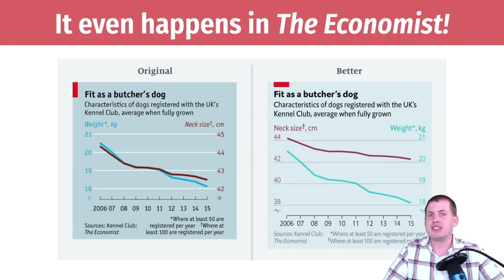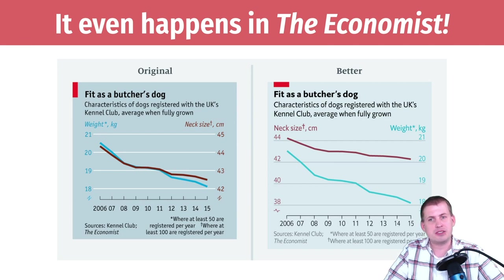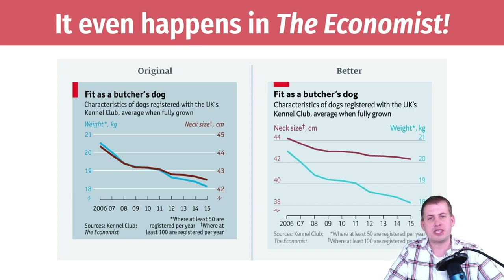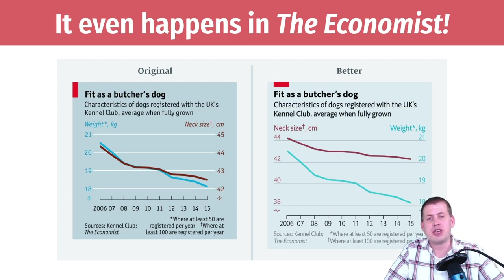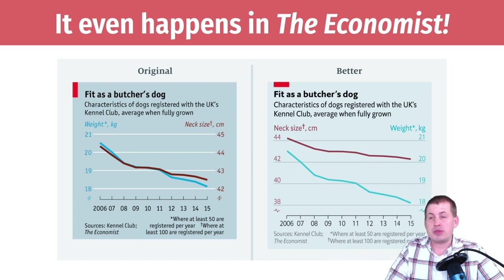It's not just goofy websites with spurious correlations on purpose — regular publications do this. The Economist, which is fairly good at data visualization with a whole team dedicated to making plots, goes back at the end of the year and reflects on the graphs they've made in a blog post. In one bad plot, they actually did a double y-axis.